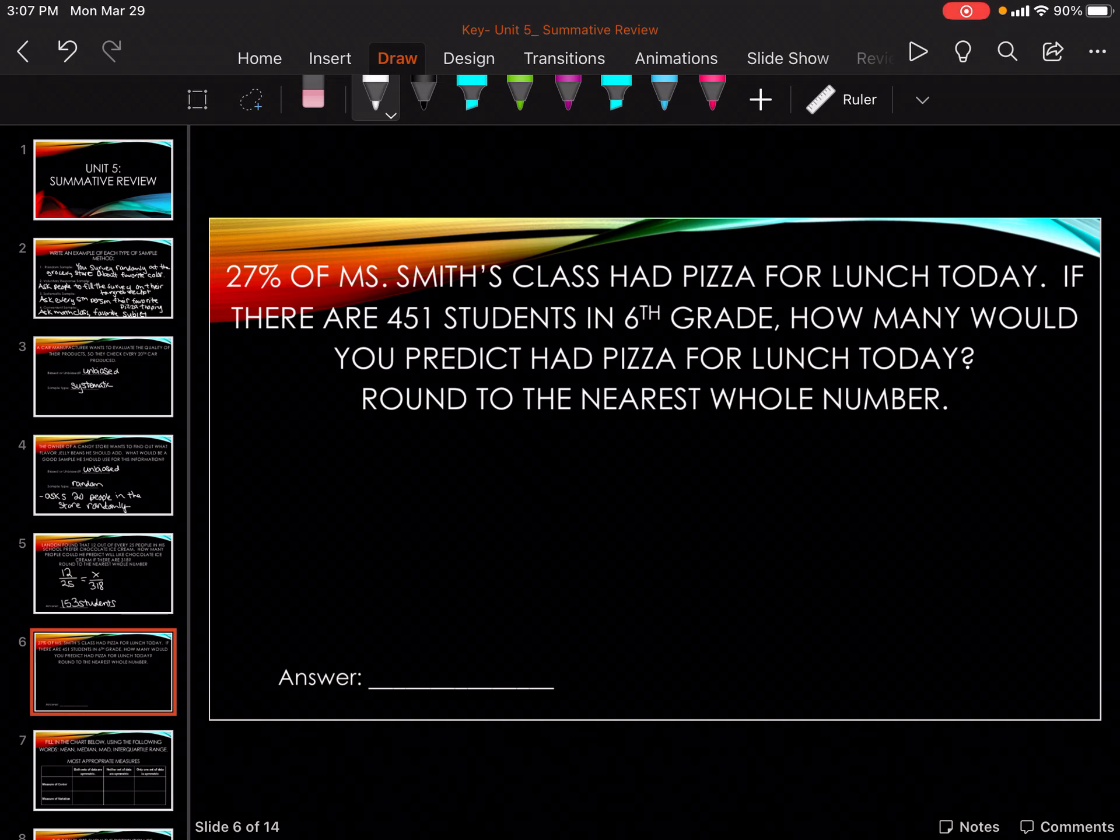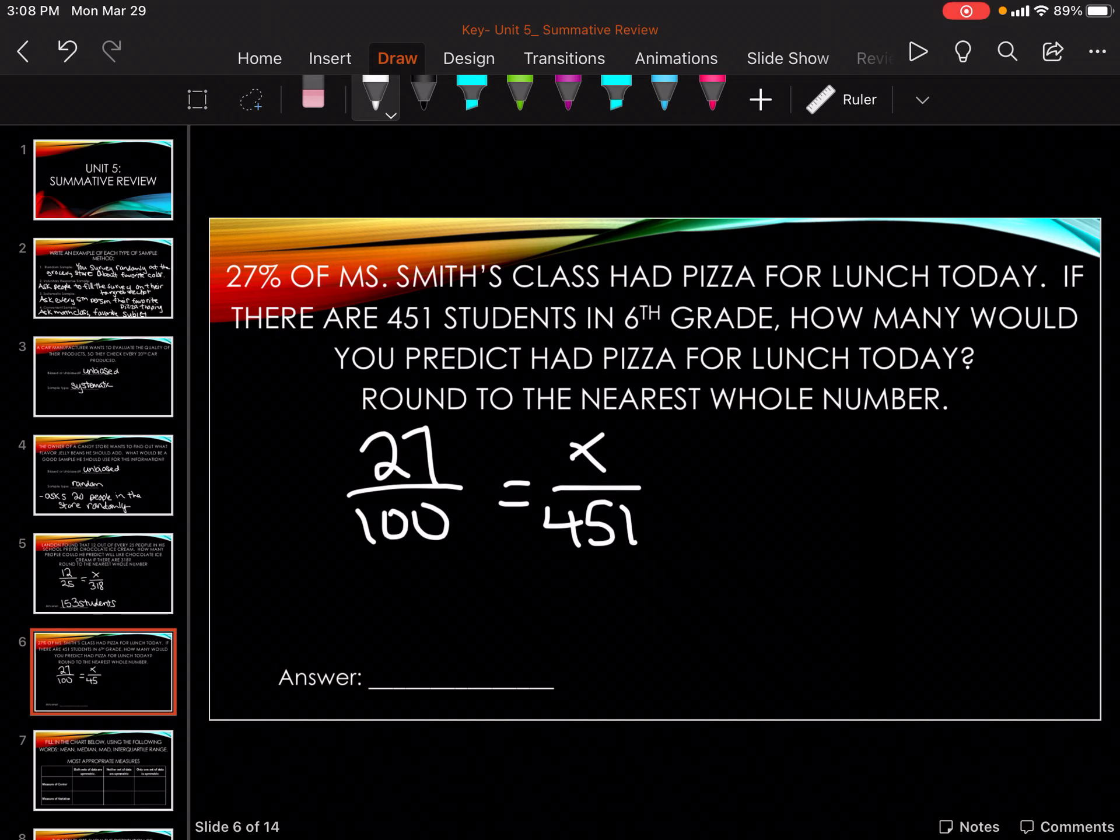27 percent of Miss's class had pizza for lunch today. If there's 451 students in sixth grade, how many would you predict had pizza for lunch today? Round to the nearest whole number. So 27 out of 100 equals x over 451. 451 times 27 divided by 100. Percent is always out of 100. Nearest whole number 122 students.